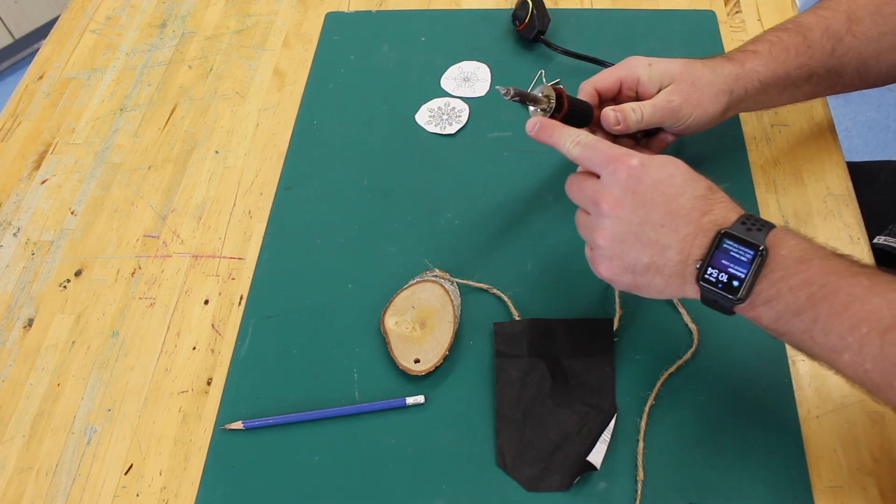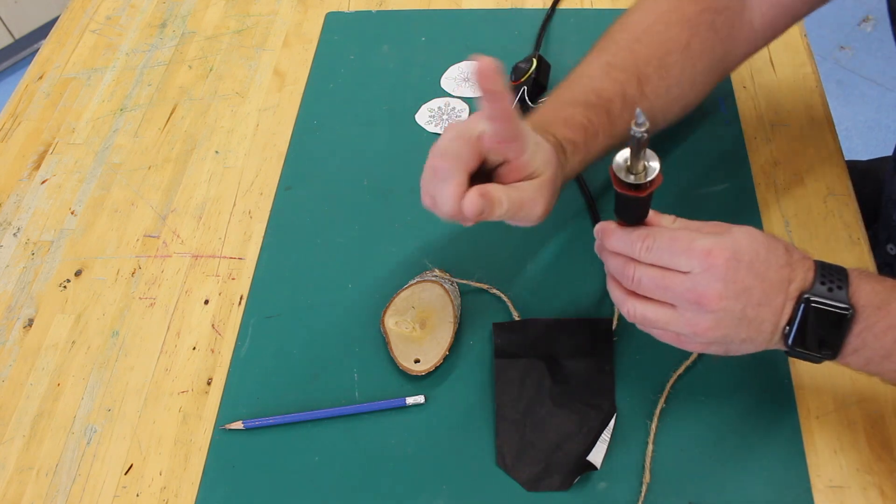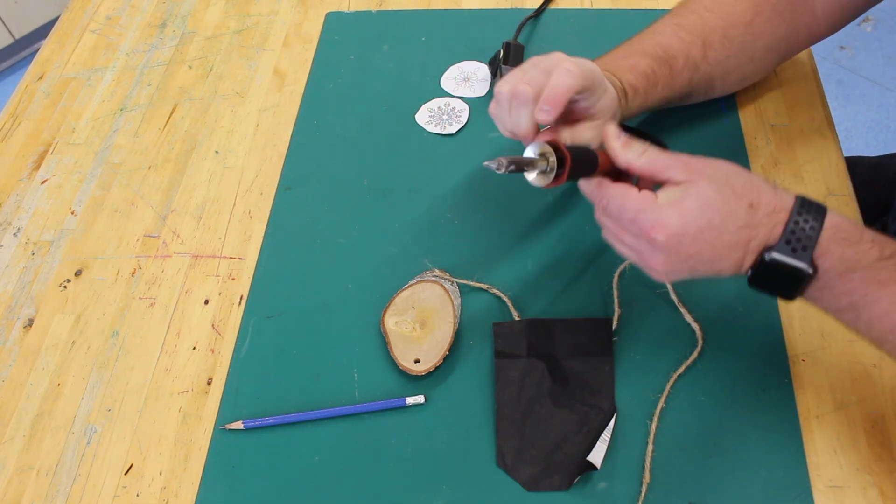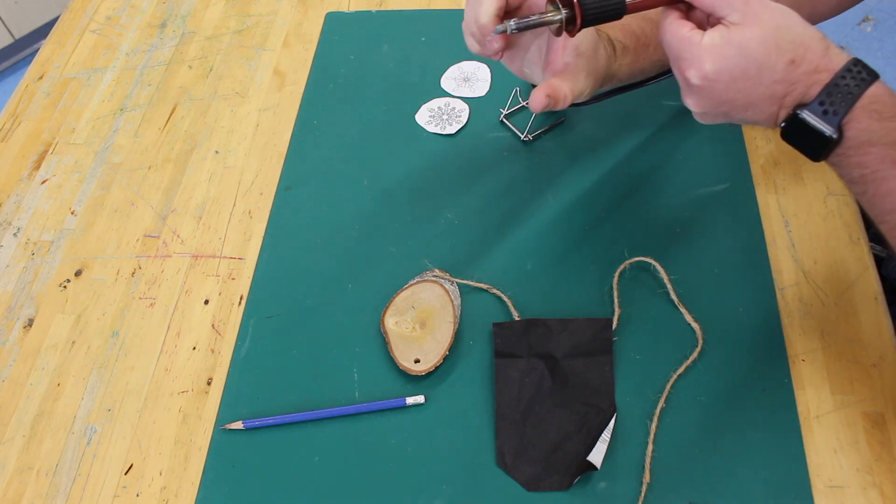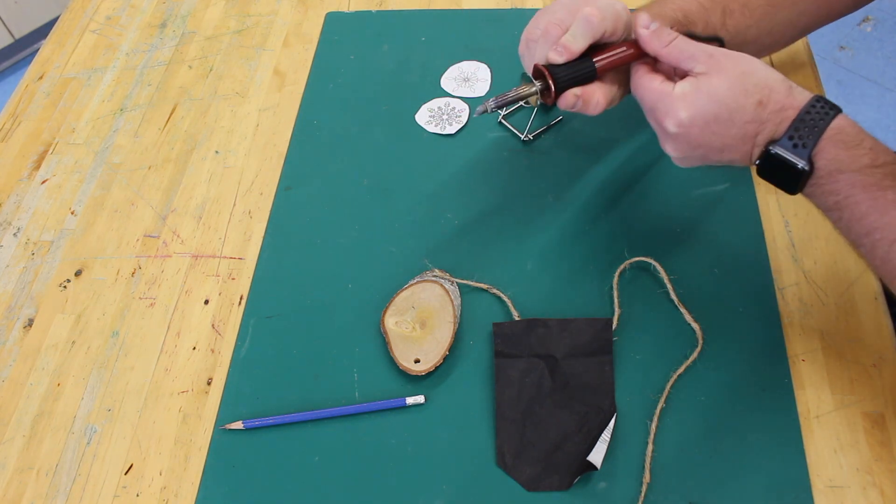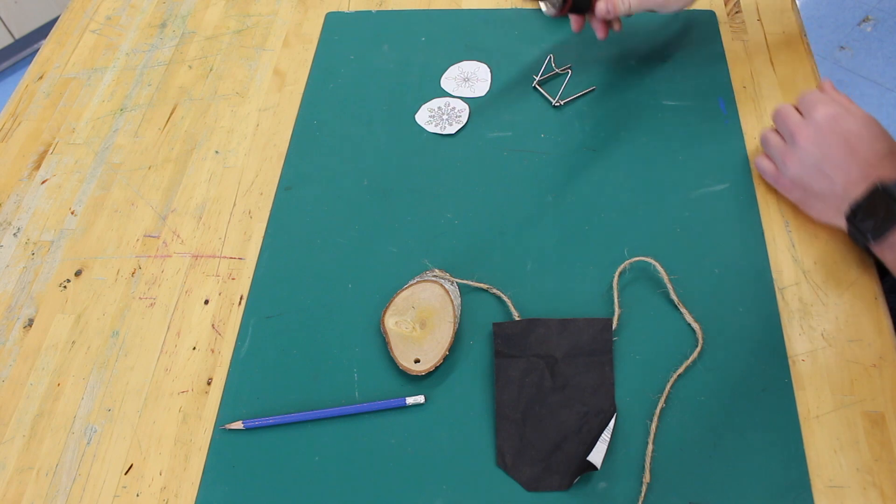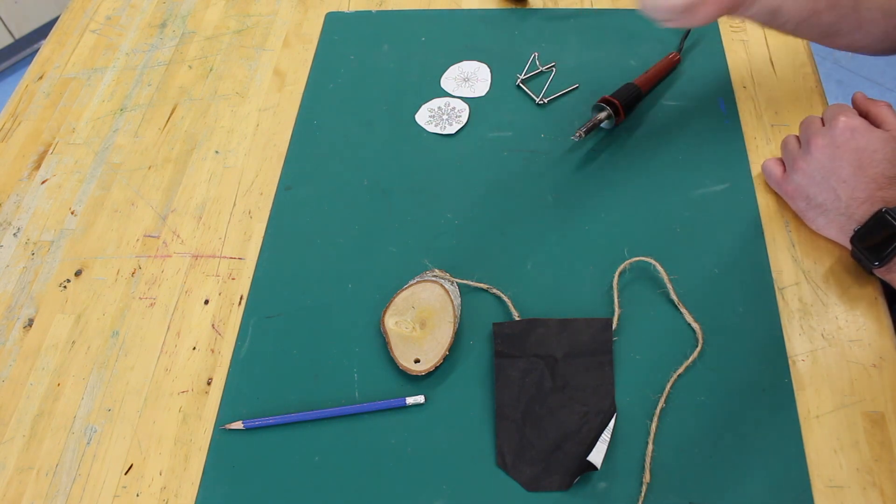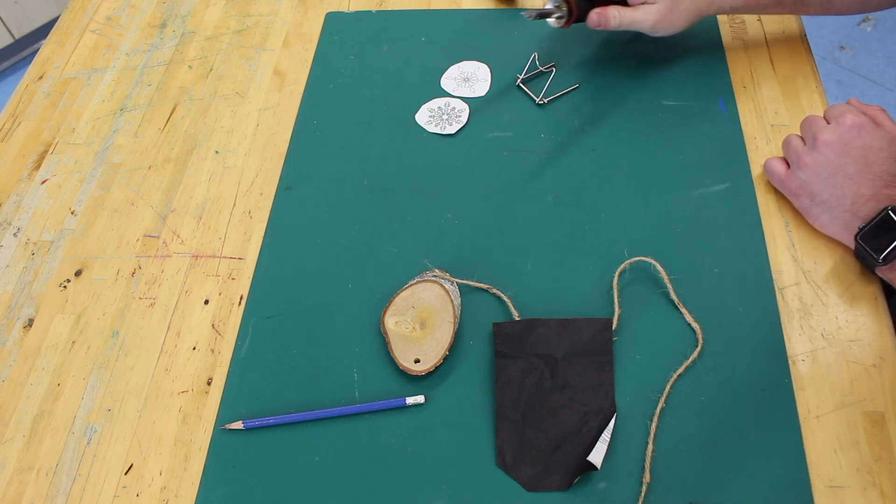When using the pyrography wood burning tool, never ever touch the metal tip. There is a plastic flange towards the end and a little rubber grip. That's where you keep your hands. Your hand never goes beyond that little plastic flange, and when you're putting it down, always set it on a holder.